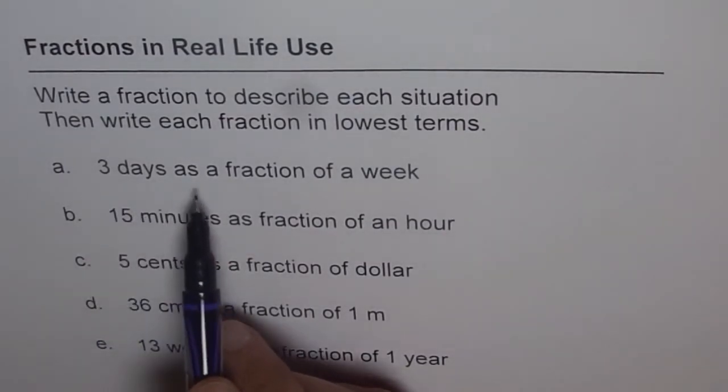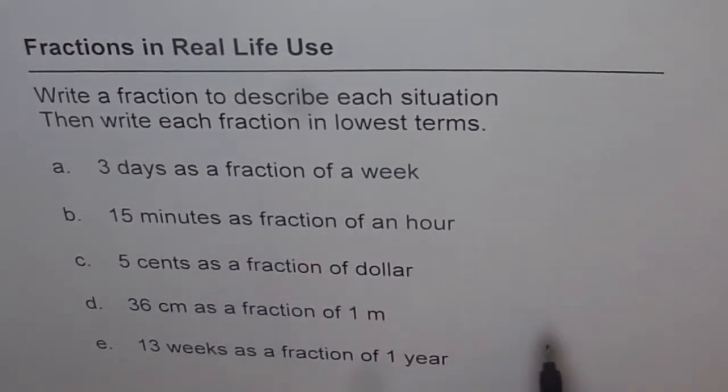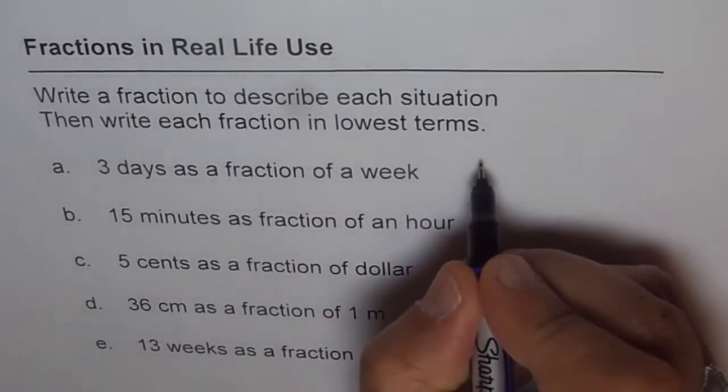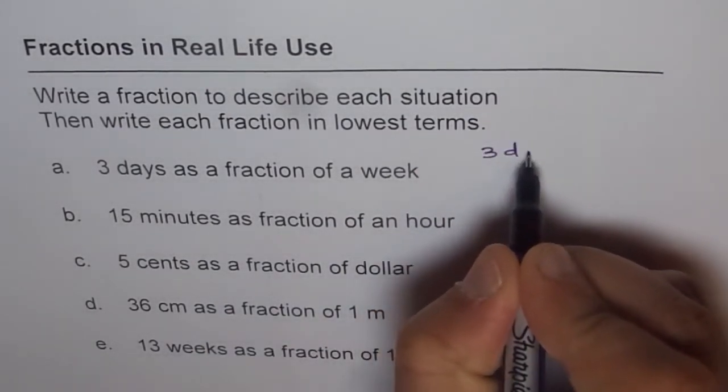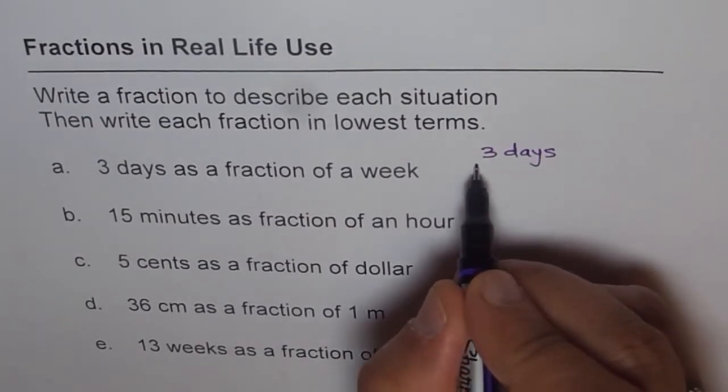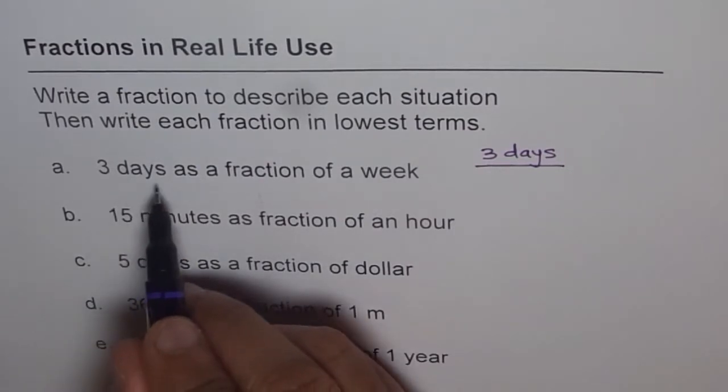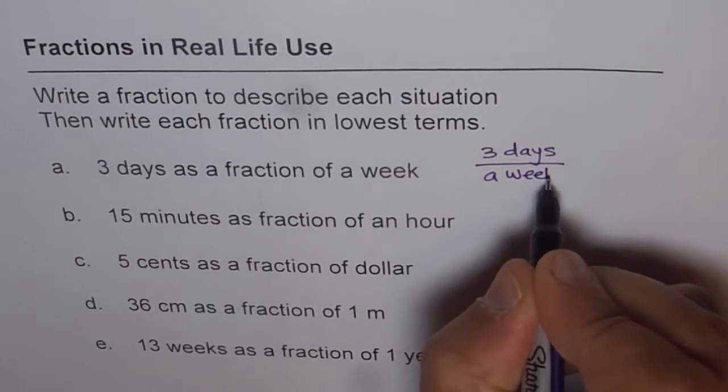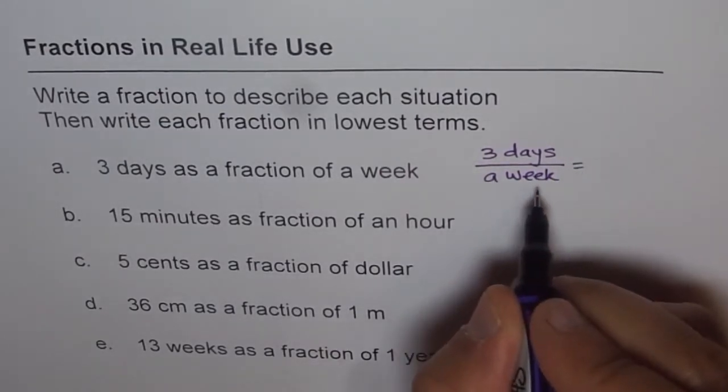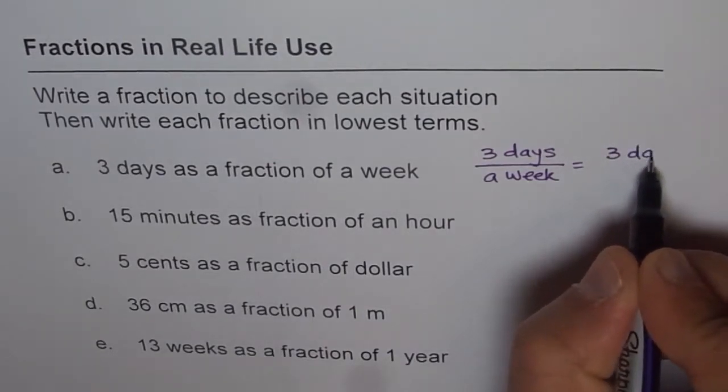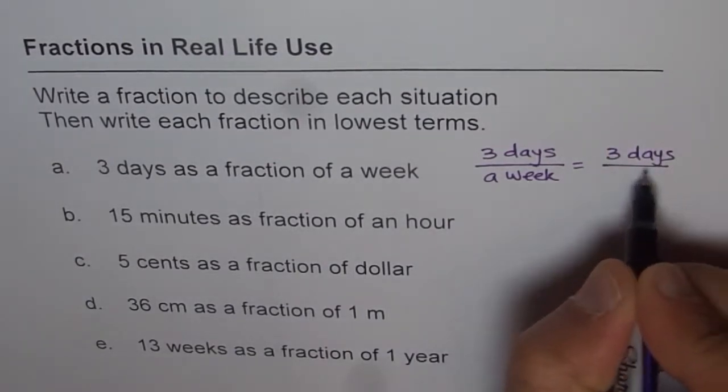First one is 3 days as a fraction of a week. As you know, in a week there are 7 days. So we can write 3 days as a fraction of a week. First let us write 3 days. When we say fraction, it is something which is numerator over denominator. So numerator is 3 days and the denominator is a week, that is the denominator. Now, how many days are there in a week? There are 7 days, correct?